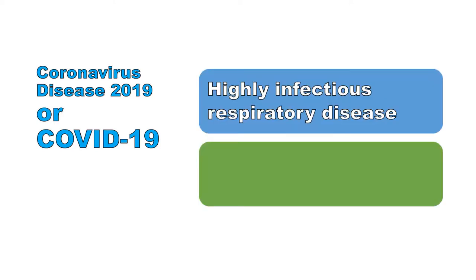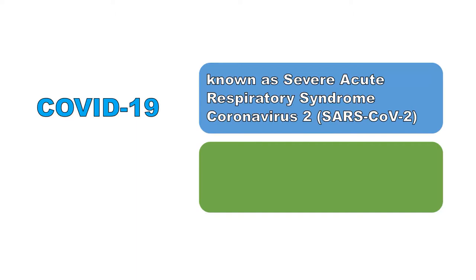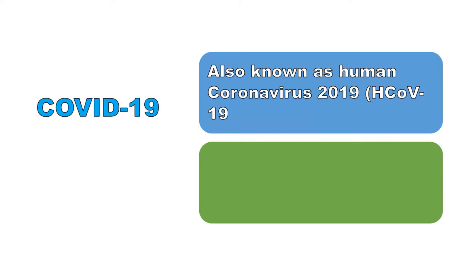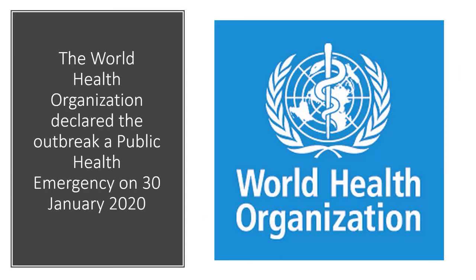Coronavirus disease 2019, or COVID-19, is a highly infectious respiratory disease caused by the novel coronavirus SARS-CoV-2, known as severe acute respiratory syndrome coronavirus 2, also called 2019 novel coronavirus or 2019-nCoV. It emerged in Wuhan, China in December 2019. That's why it is named COVID-19. The World Health Organization declared the outbreak a public health emergency in January 2020.